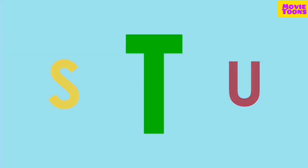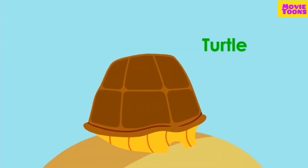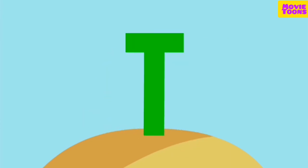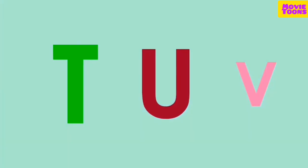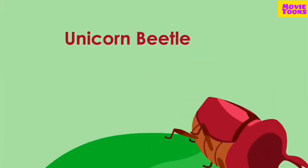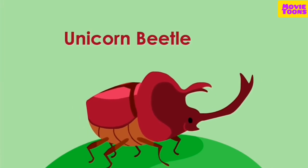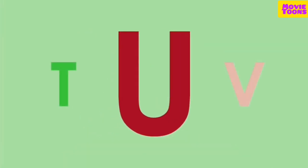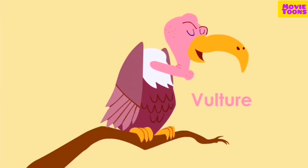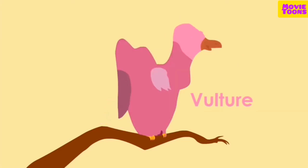T is for turtle. T. U is for unicorn beetle. U. V is for vulture. V.